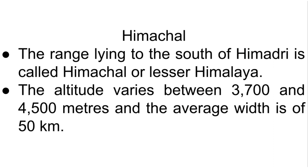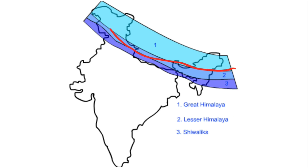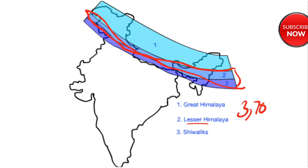The next division is Himachal, also called the Lesser Himalayas. It lies to the south of Himadri. The altitude varies between 3700 and 4500 meters, and the average width is 50 kilometers. These ranges are mainly composed of highly compressed and altered rocks.